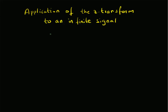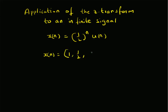Given a signal x of n, for example (1/2)^n * u(n), that is a power series where x(n) takes values 1, 1/2, 1/4, and so on — a general term given by (1/2)^n up to infinity. That is, we have an infinite number of terms in this sequence.